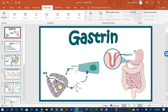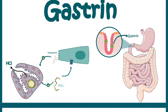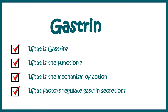Hello everyone. In this video we will talk about gastrin. Gastrin is a local hormone found in the gastrointestinal system whose major function is to secrete gastric HCL. In this video we will look at what gastrin is, what its function is, what the mechanism of action is, and finally what factors regulate gastrin secretion.